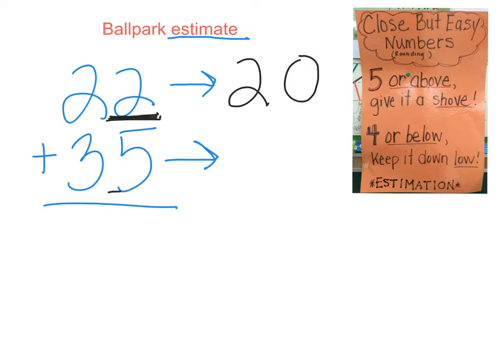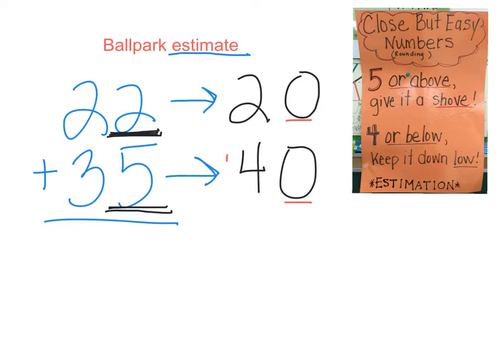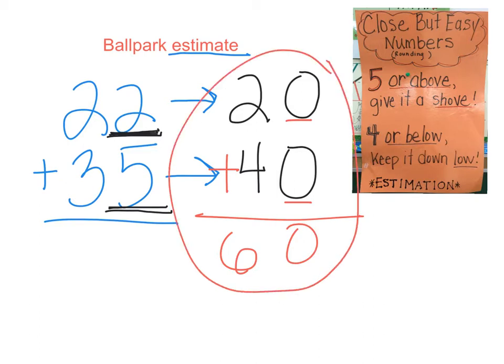Thirty-five. Five is in the ones place. Five or above, give it a shove. We're going to round thirty-five up to forty. Remember, both numbers we round to must end in zero. Let's now add our two estimations. Twenty plus forty, we get sixty. This is your ballpark estimation with an answer of sixty.